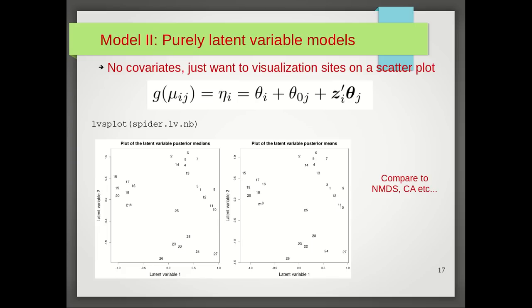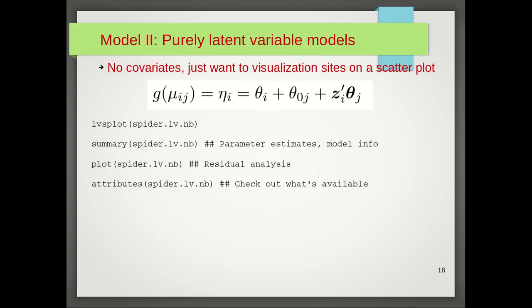These ordination plots you can interpret and compare to plots from CA or NMDS, for example. You can see in these ordination plots you actually have three site clusters, with site 25 looking roughly in between the three clusters. So that's a model-based approach to unconstrained ordination. Because it is a model-based approach, you can use summary to obtain parameter estimates, you can use plot to do residual analysis, and if you want to check out what's available in the model fit, you can try the attributes function.